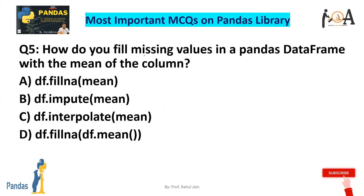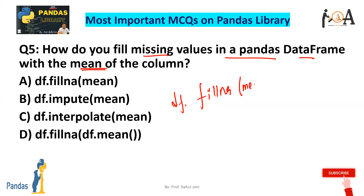Question 5: How do you fill missing values in pandas? For filling any missing value in a pandas DataFrame with the mean value, the method we use is fillna. If you want to fill with the mean value, we can use df.fillna followed by mean. It is going to catch the mean value and all missing values will be replaced with the mean value of the data.